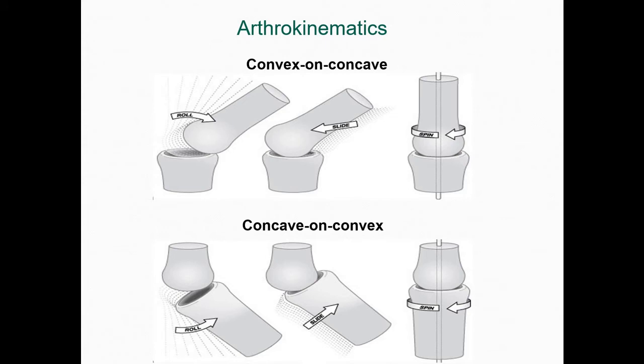Just as with osteokinematics, in arthrokinematics it's again important to use precise language to understand the particular motion occurring. When talking about joint motion, we use the characteristics of joint surfaces — in particular whether an articular surface is convex or concave — in order to clarify what's going on with the motion. Here we see convex on concave roll, slide, and spin, where the convex articular surface is moving relative to the concave surface. On the bottom of the screen, we see concave on convex motions.